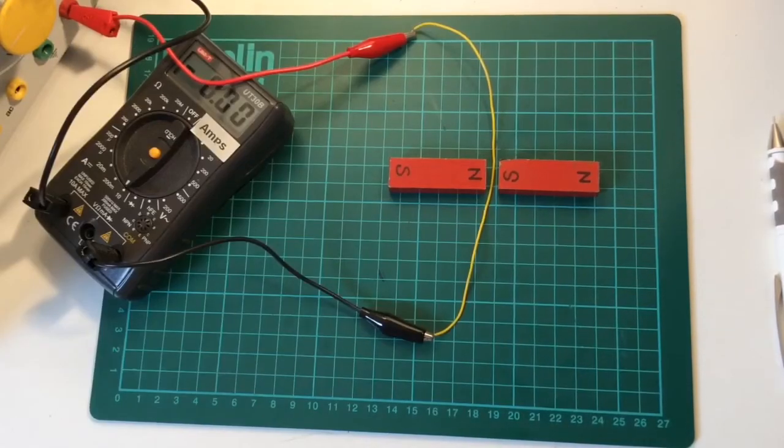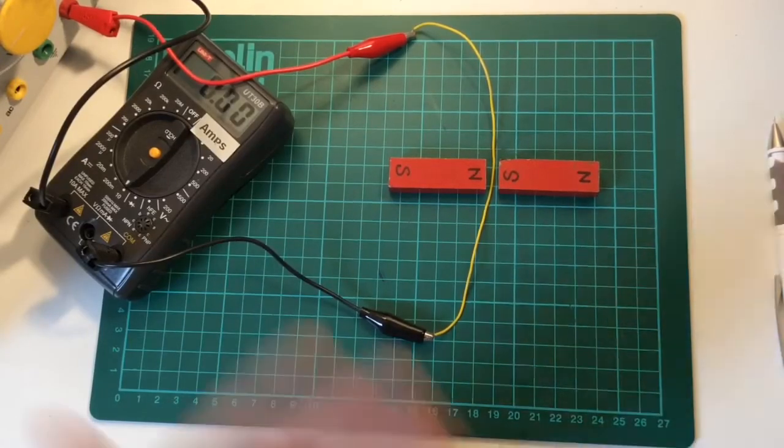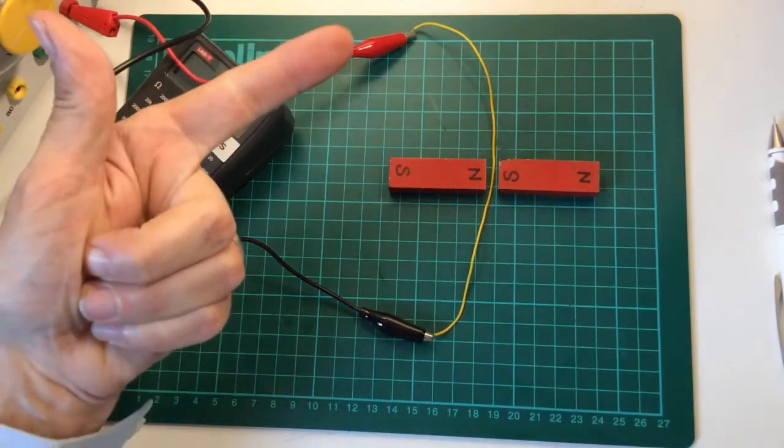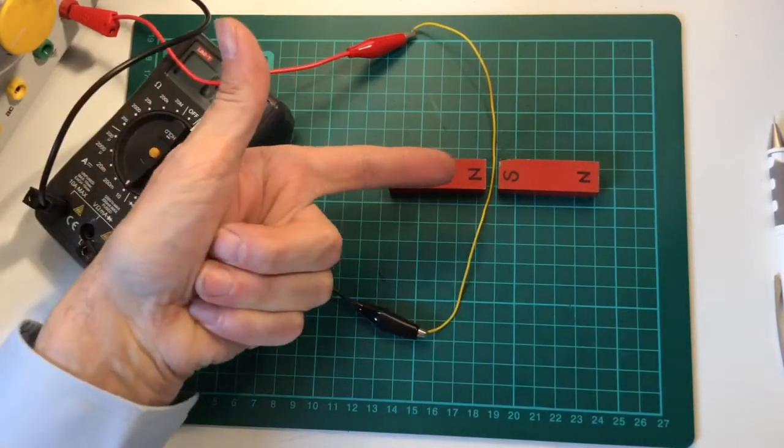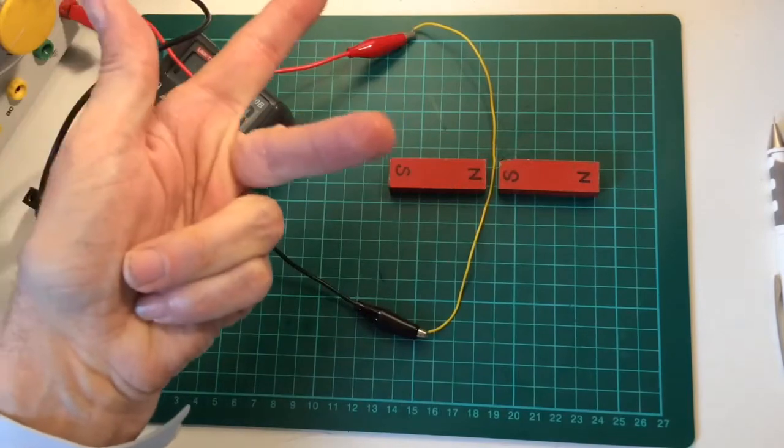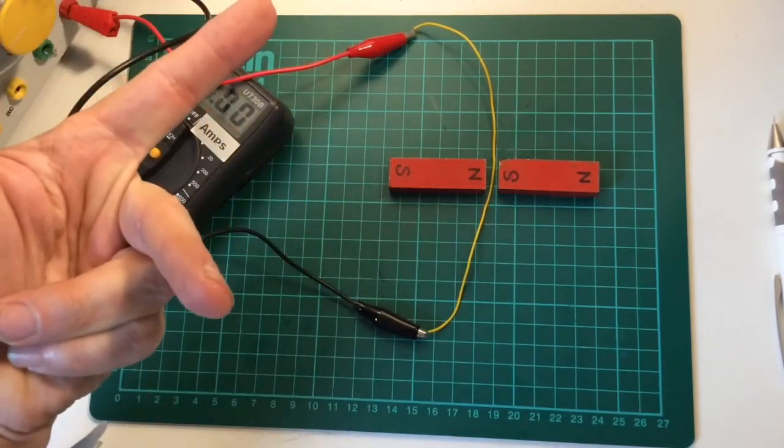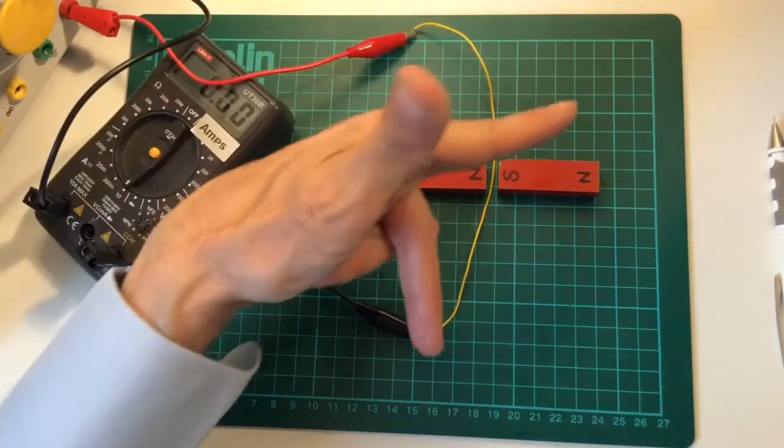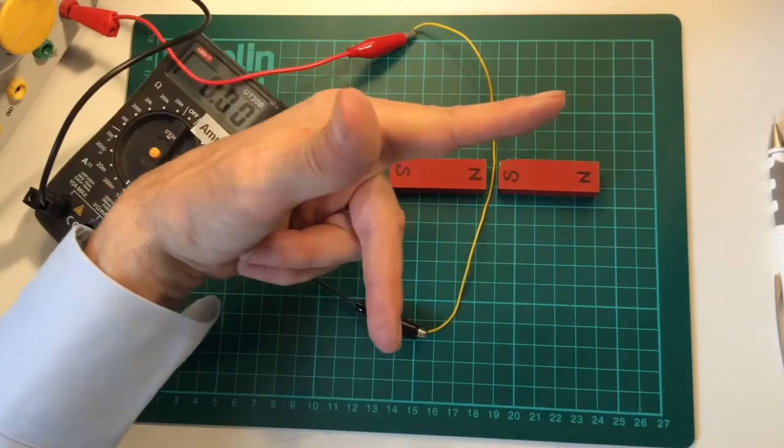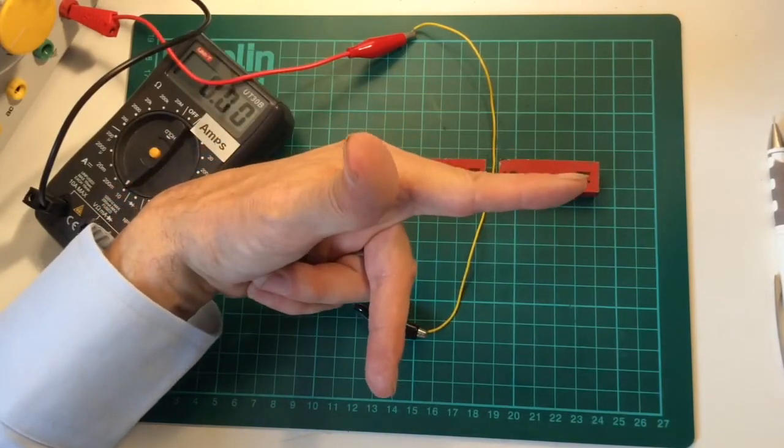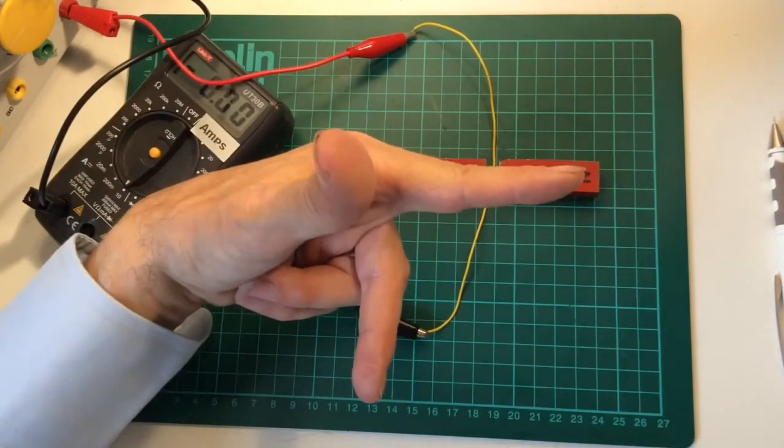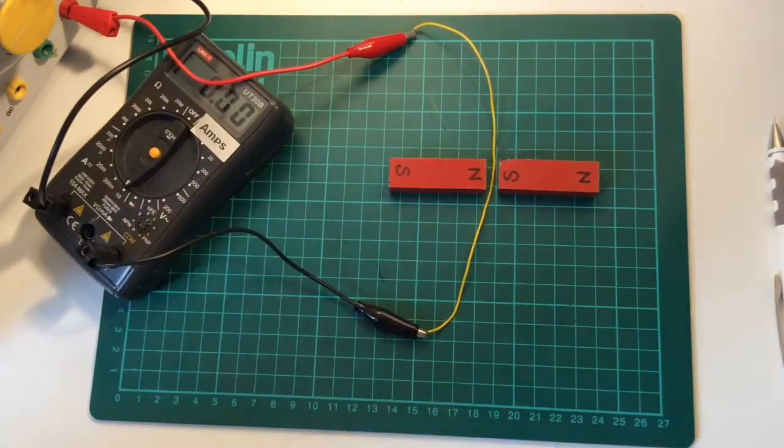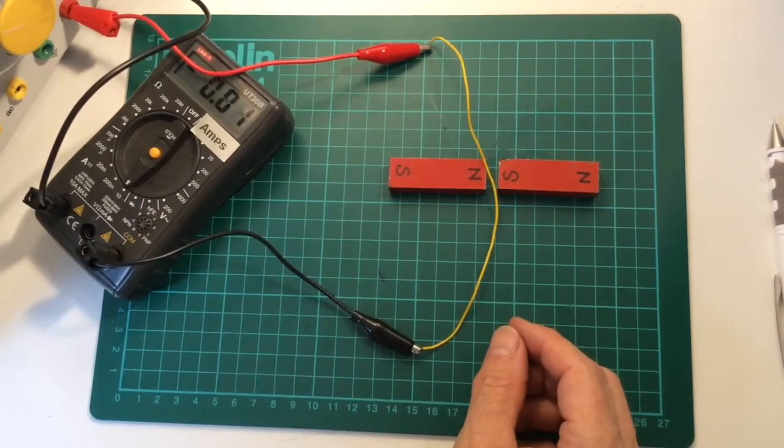To find the direction the wire will move we use Fleming's left hand rule. The first finger points in the direction of the magnetic field north to south. The second finger points in the direction of the current, top to bottom in this case. The thumb represents the motion of the wire. So the thumb points upwards, the wire will move upwards. Let's check. Yes the wire moves up.